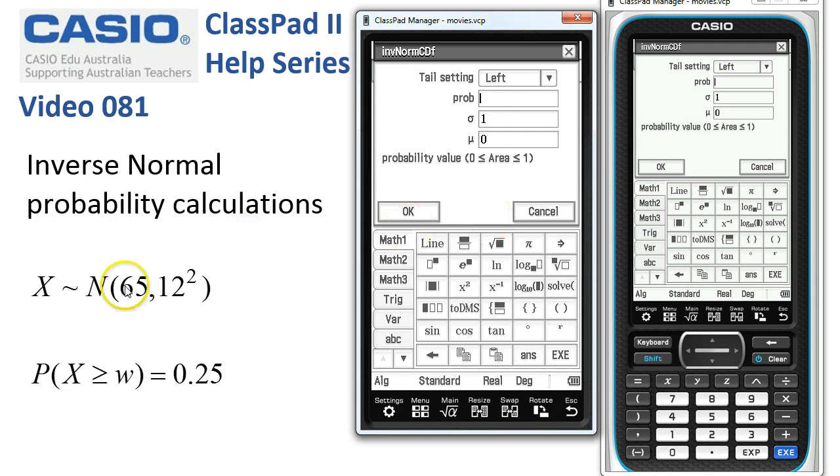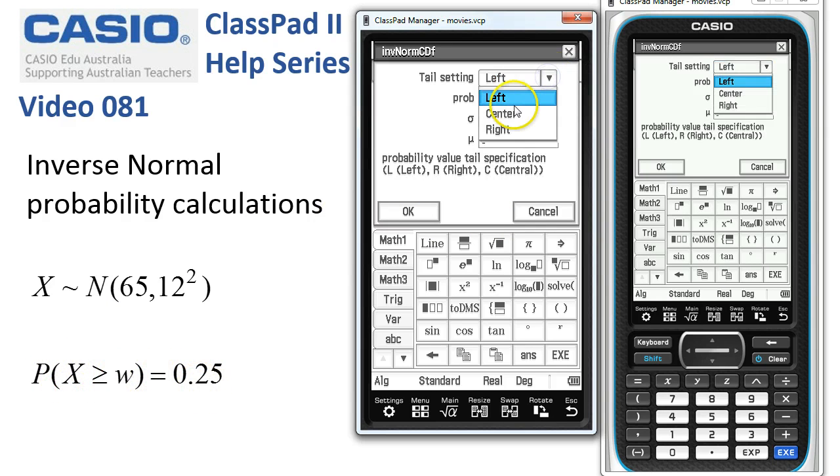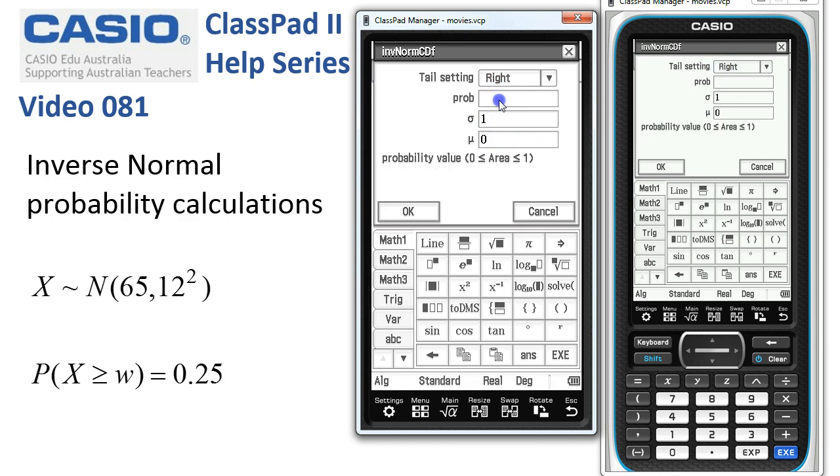For this particular problem we're trying to find the value of w so that the probability that we're greater than that value is only 0.25. So that would make it a right tail type of problem. Left, center, or right tail. And the probability would be 0.25.